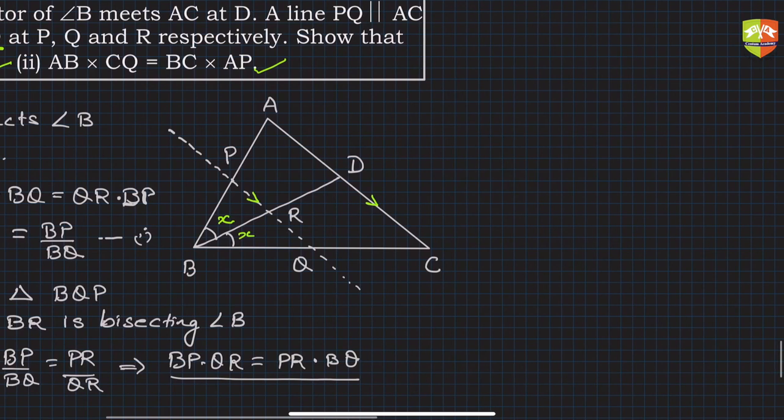Since AB and BC are involved and the line is parallel, we can apply the Basic Proportionality Theorem (BPT). By BPT's corollary: